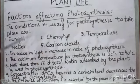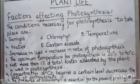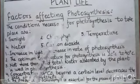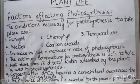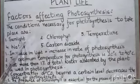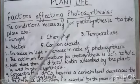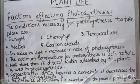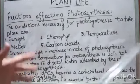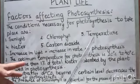Now comes factors affecting photosynthesis. Photosynthesis is the process by which green plants prepare their own food, and there are certain factors that affect this process. The conditions necessary for photosynthesis are sunlight, chlorophyll, temperature, water, and carbon dioxide. If there is an increase in temperature, it will also increase the rate of photosynthesis. The optimum temperature for photosynthesis is 20 degrees Celsius to 40 degrees Celsius — meaning the process will be best between 20 and 40 degrees, not below 20 and not above 40.